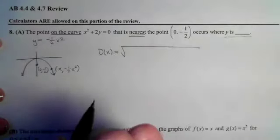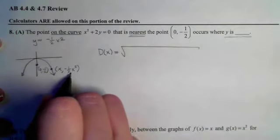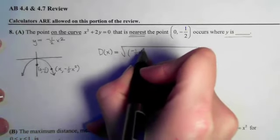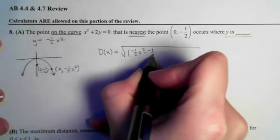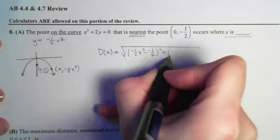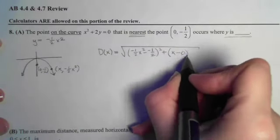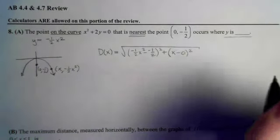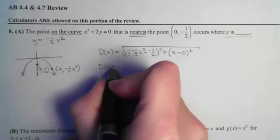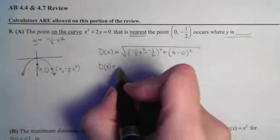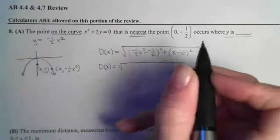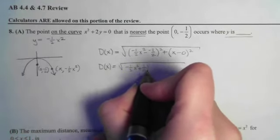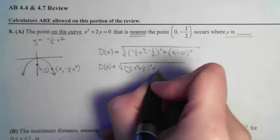So the distance formula, if you recall, is the y minus the y squared plus the x minus the x squared. Or those could be switched. It doesn't really matter the order. So I'm going to rewrite that, so it's easier to put into my calculator. Looks like I've got a negative 1 half x squared plus a 1 half, that's all squared, plus an x squared.